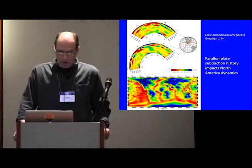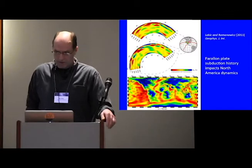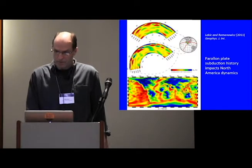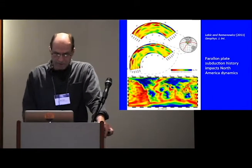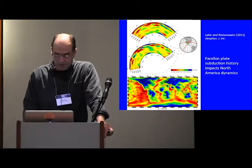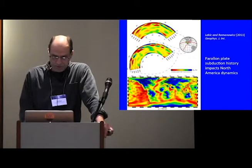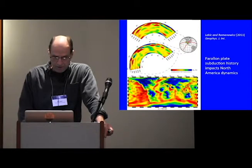So to understand the coupling beneath North America, we've got to look at the tomography. This is a model from Lekic and Romanowicz, a shear wave model. It's relatively low degree, but it shows what I want to show. And this dot here on the West Coast is located here. To understand the dynamics beneath North America, we have to understand and look at the history of subduction.